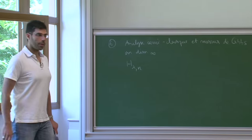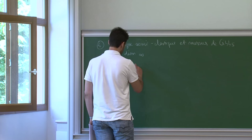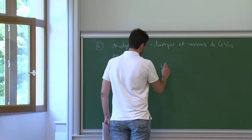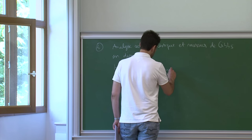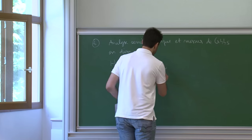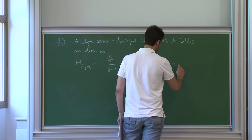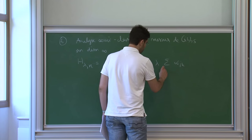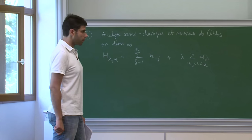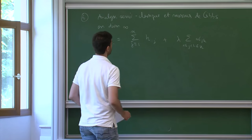Donc on regarde un Hamiltonien qui décrit n particules. Donc n maintenant c'est un petit l au lieu d'être un grand N, ce n'est pas très important, qui s'écrit sous la forme abstraite suivante : la somme j égal 1 à n d'un opérateur h qui agit sur la j-ième variable, plus lambda, une partie à deux corps, somme de W_jk, où on somme sur toutes les paires jk entre 1 et N, et lambda c'est une constante de couplage.